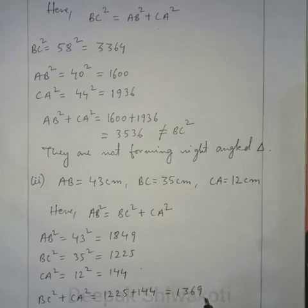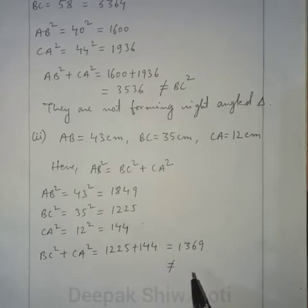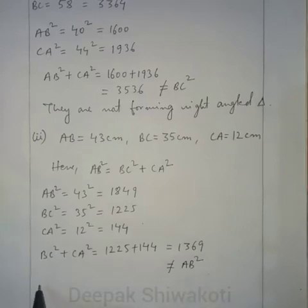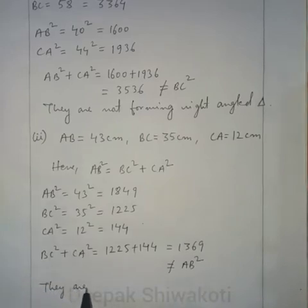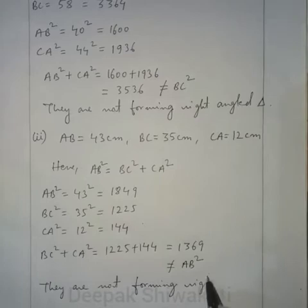BC² + CA² = 1225 + 144 = 1369, which is not equal to AB² (1849). Therefore, these three sides do not form a right-angled triangle.